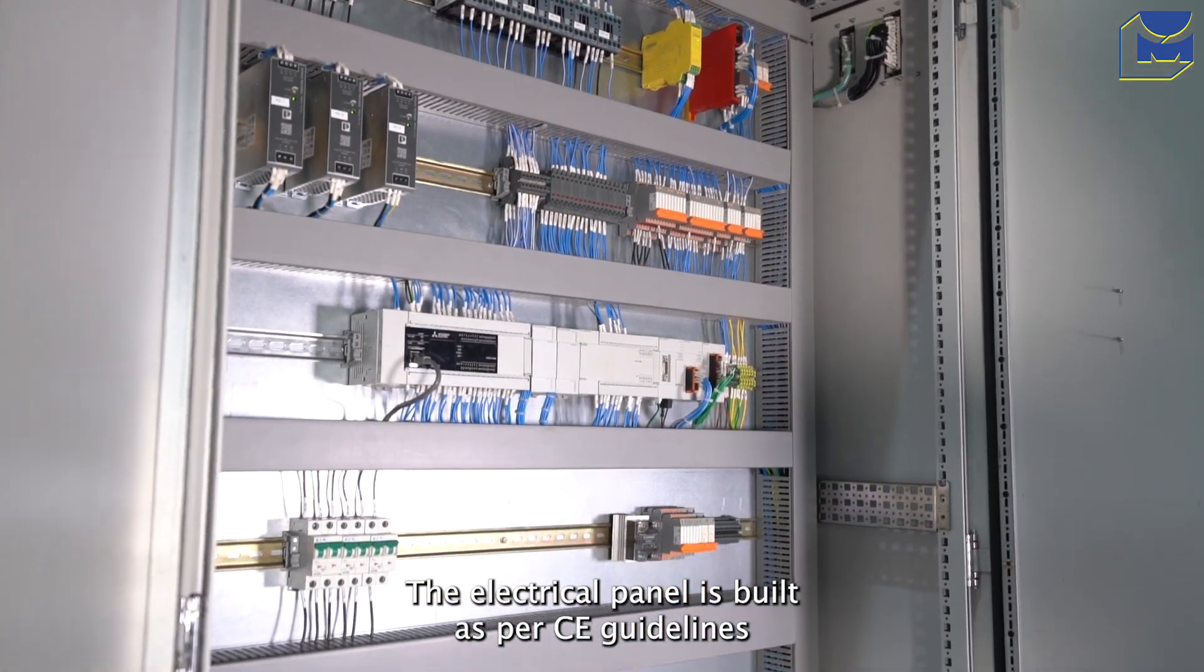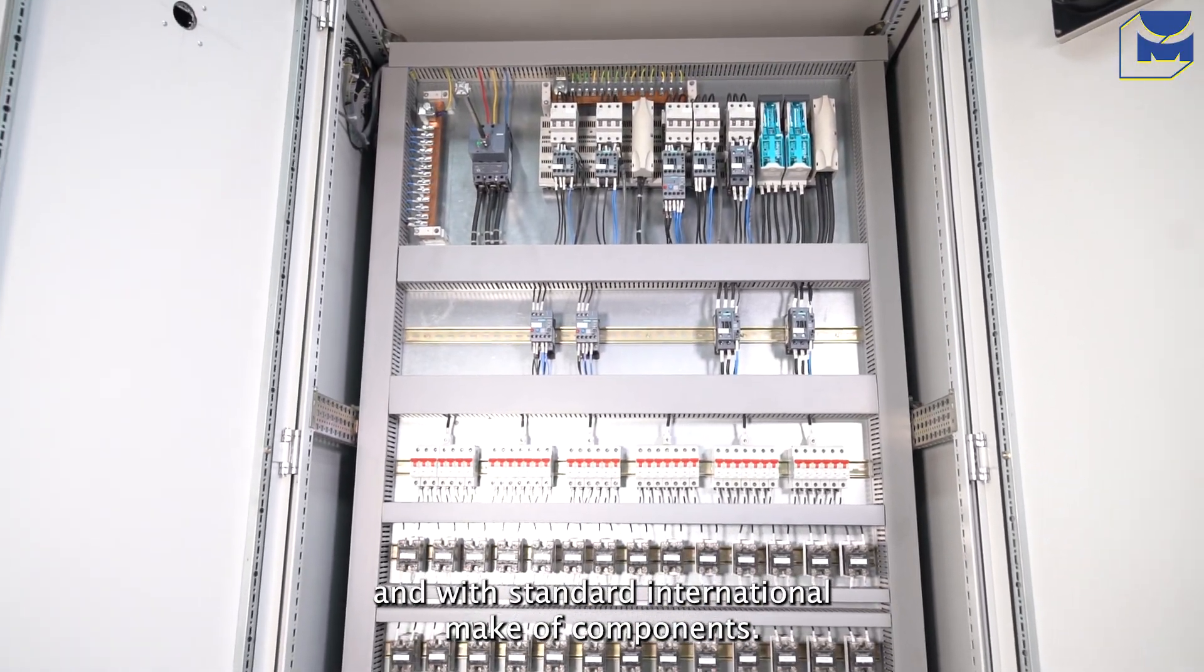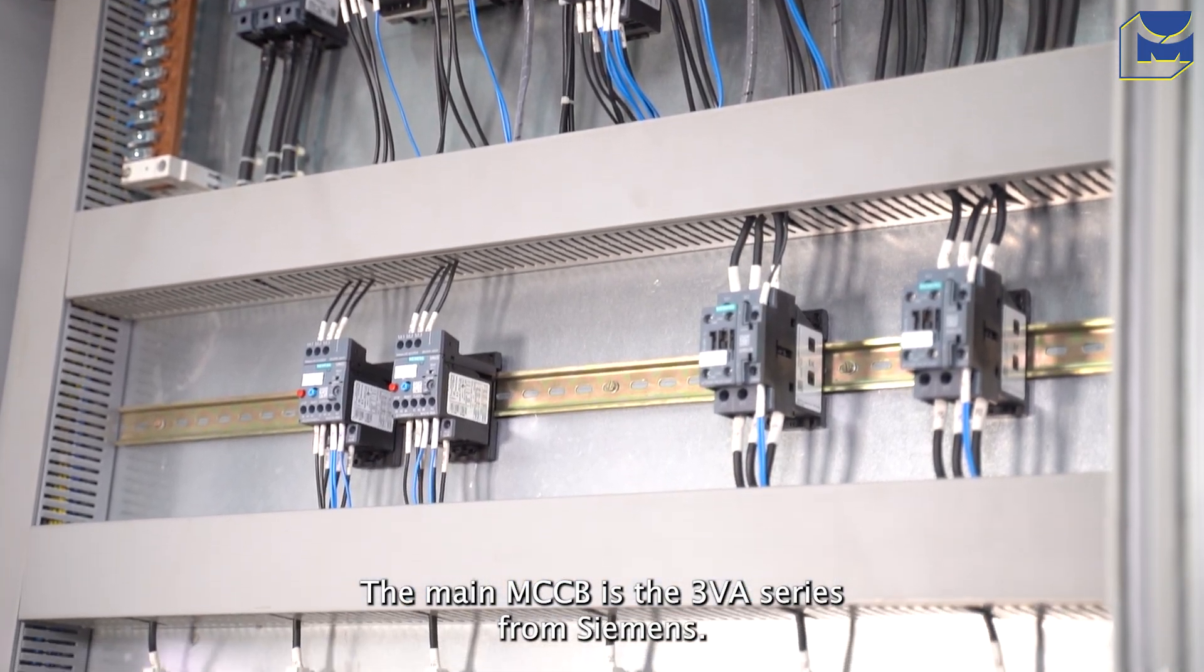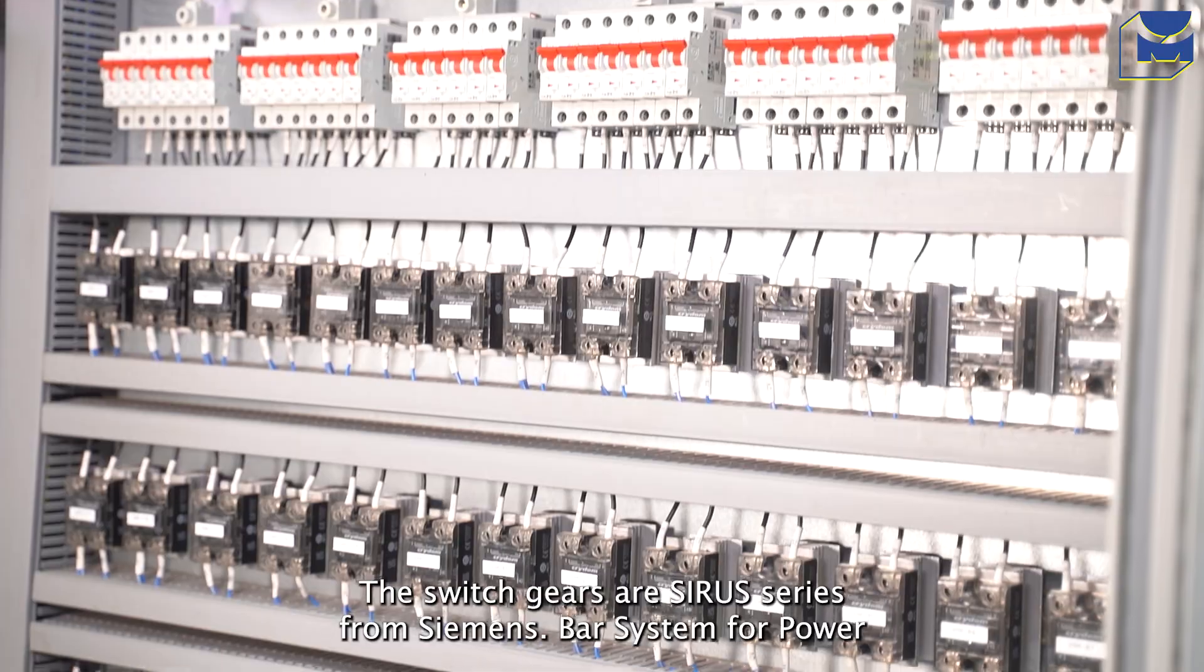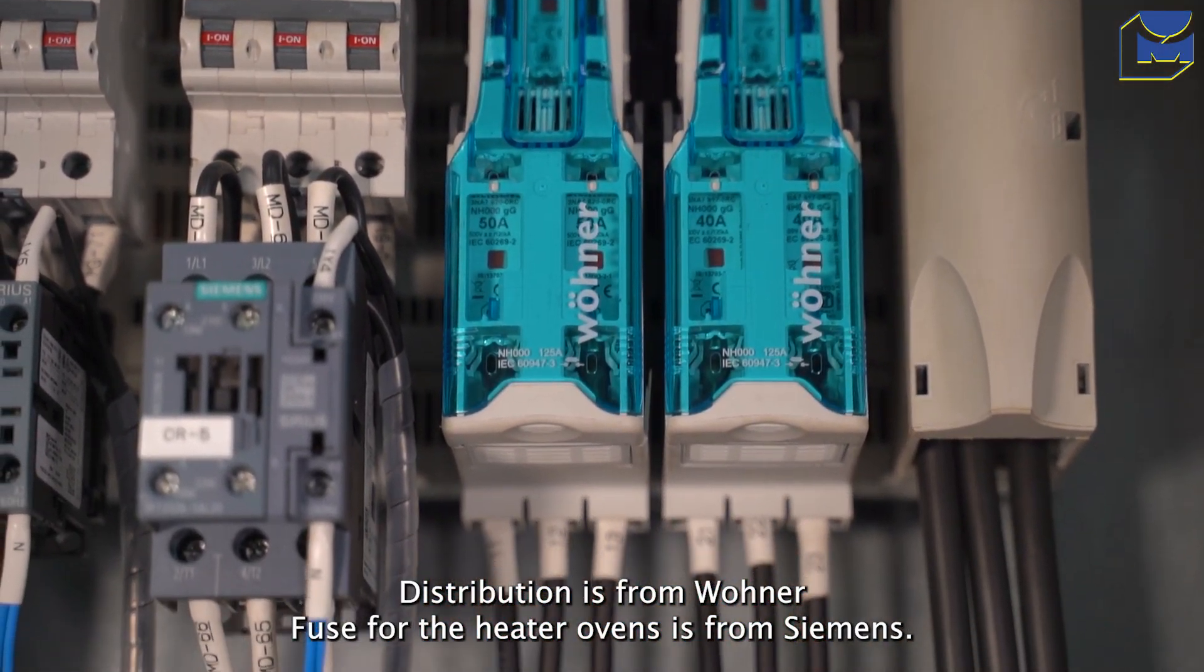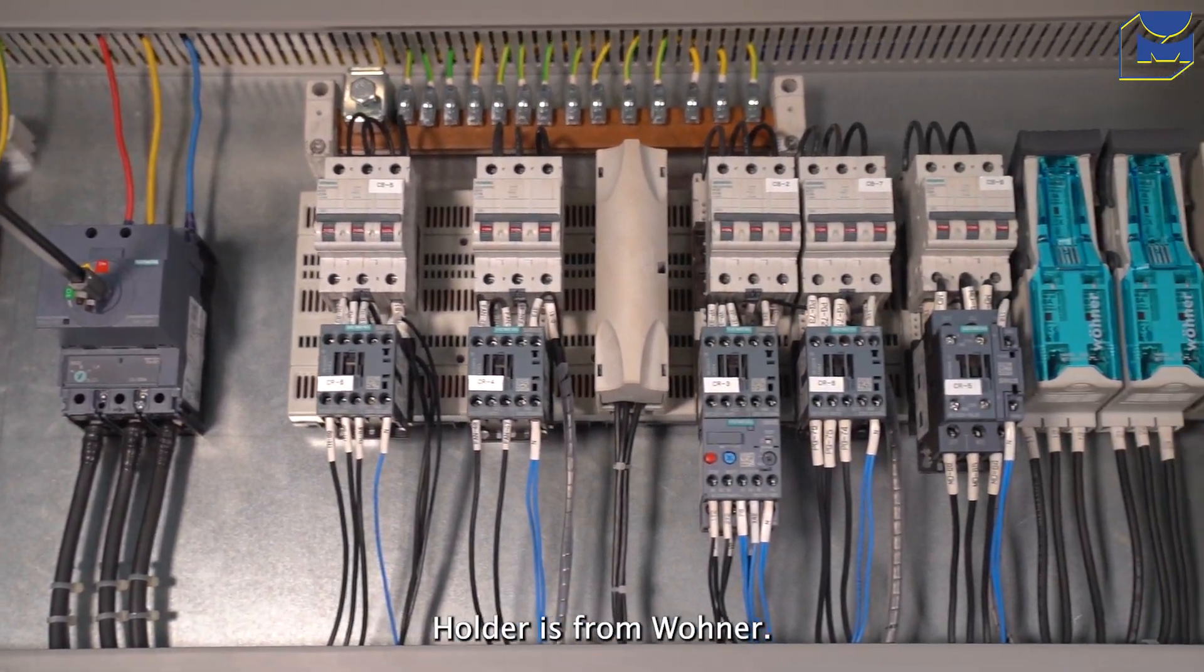The electrical panel is built as per CE guidelines with standard international components. The main MCCB is the 3VA series from Siemens. The switch gears are Sirius series from Siemens. Bus bar system for power distribution is from Wohner. Fuses for the heater ovens are from Siemens, and holders are from Wohner.